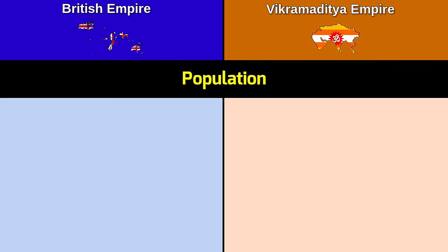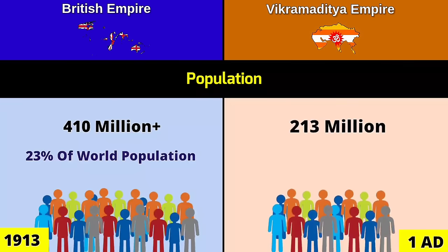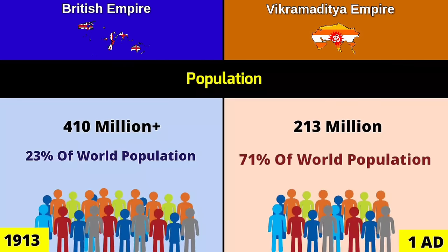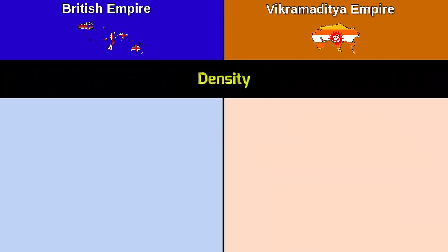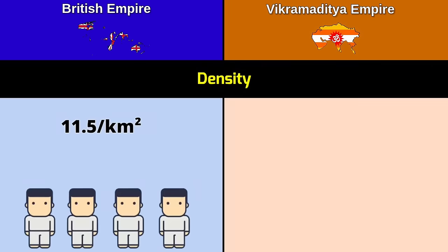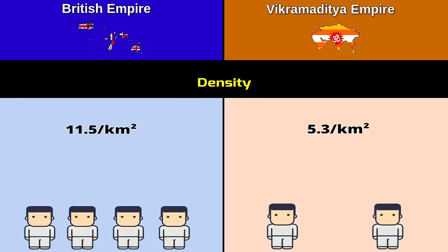Population: British Empire — 410 million, 23 percentage of world population. Vikramaditya Empire — 213 million, 71 percentage of world population. Density: British Empire — 11.5 per square kilometer; Vikramaditya Empire — 5.3 per square kilometer.